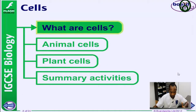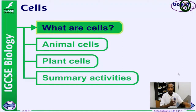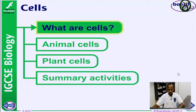In this topic on cells, we're first going to look at what cells are and the different types of cells in the body, the categories — the animal cells and the plant cells.